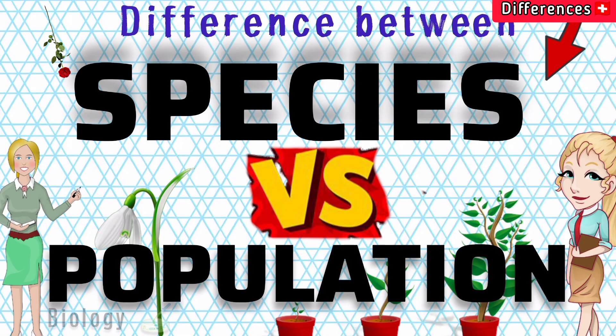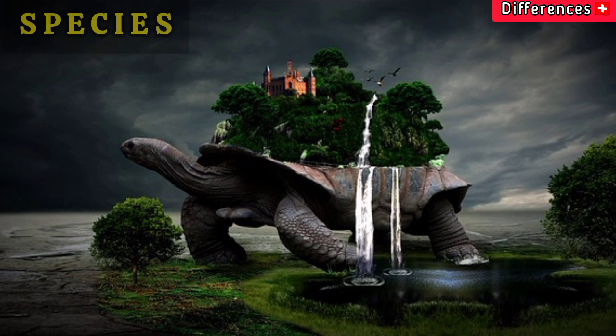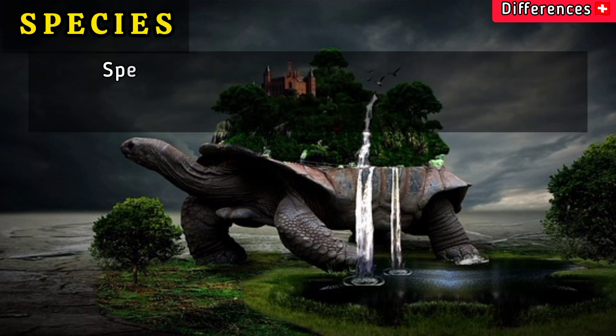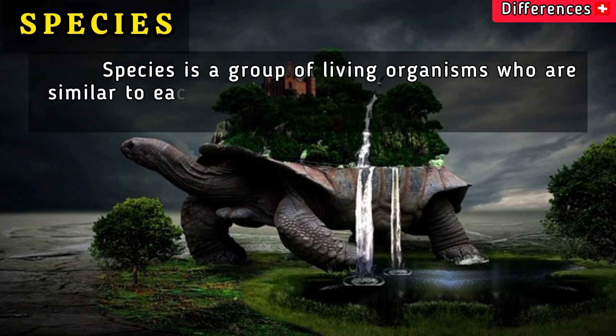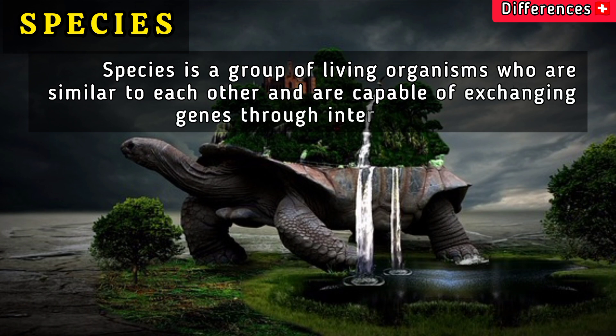In this video we will explain the difference between species and population. A species is a group of living organisms who are similar to each other and are capable of exchanging genes through interbreeding.